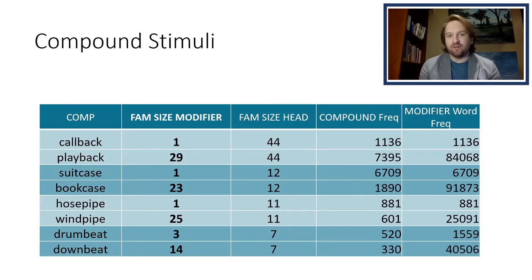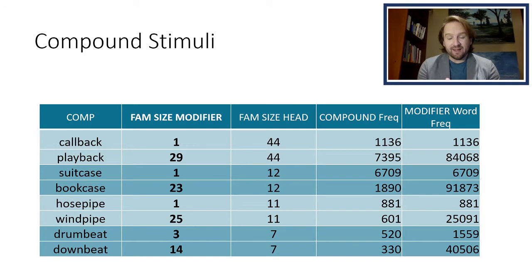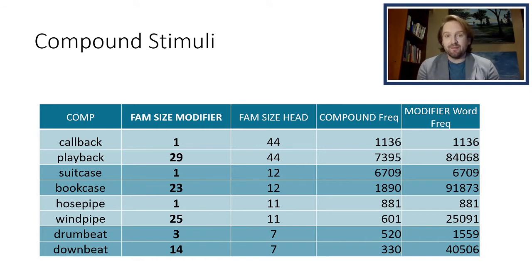We took considerable care in constructing our stimulus set. All of our compound stimuli contain exactly eight letters, and each compound consists of two constituents each of which are four letters in length. Both of these variables have been shown to influence inter-keystroke intervals, specifically at the boundary, so we wanted to exercise maximum control here. Each of our compounds also forms a stimulus pair — for example, callback and playback — each of which share the same head constituent.